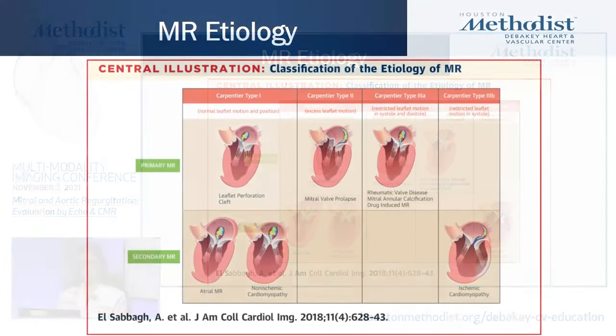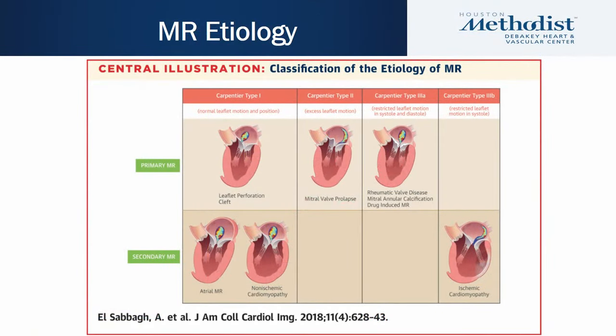Mitral regurgitation can be classified into primary or secondary. Primary mitral regurgitation can be due to leaflet perforation or cleft, mitral valve prolapse or flail, rheumatic mitral valve disease, mitral annular calcification, or drug-induced MR. Secondary MR can be divided into atrial MR and functional MR, which can be either ischemic or due to non-ischemic cardiomyopathies.